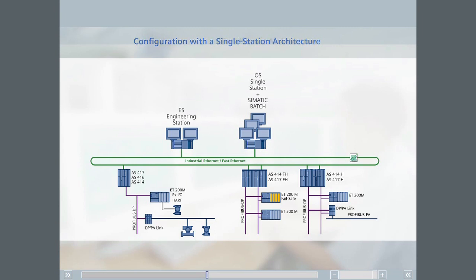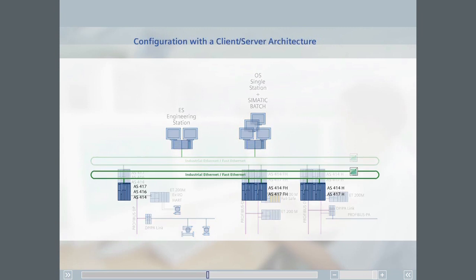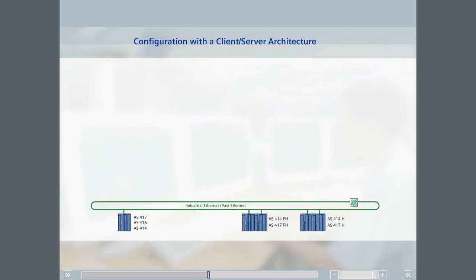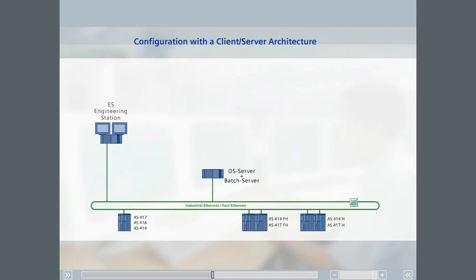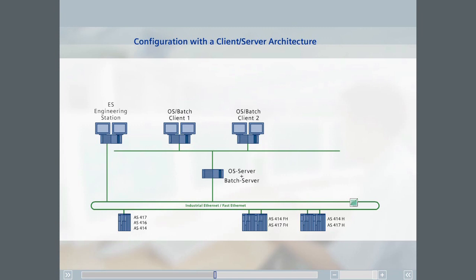In the second example, two operators will control and monitor the system at the same time. The automation systems always have one engineering station connected at all times. A client-server architecture is installed for operator control and monitoring and for Sematic batch. The ES server is connected to the automation stations over the system bus. There is also a terminal bus, over which the two clients are connected and at which the two operators work.